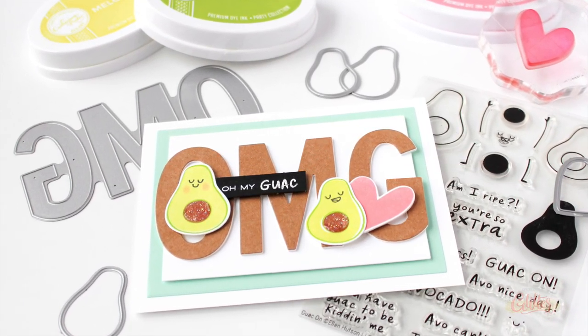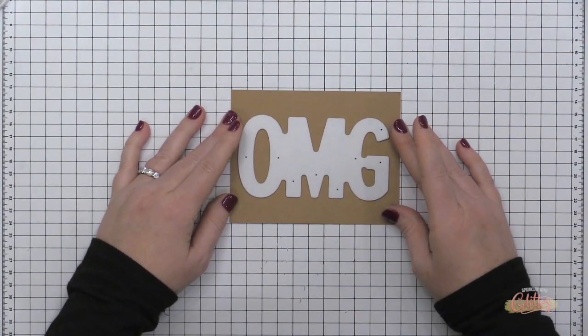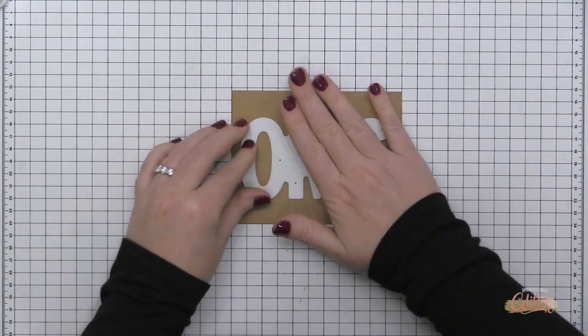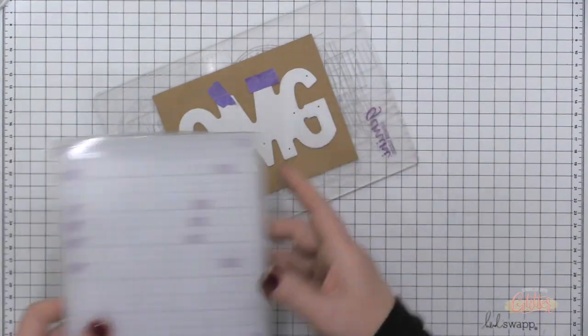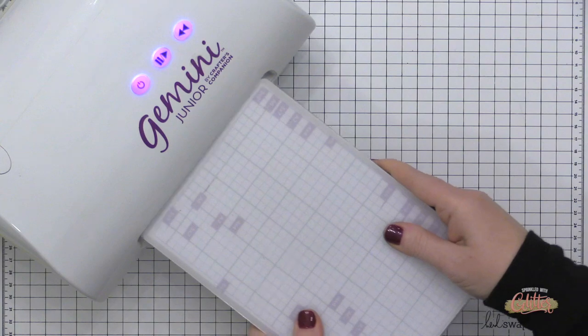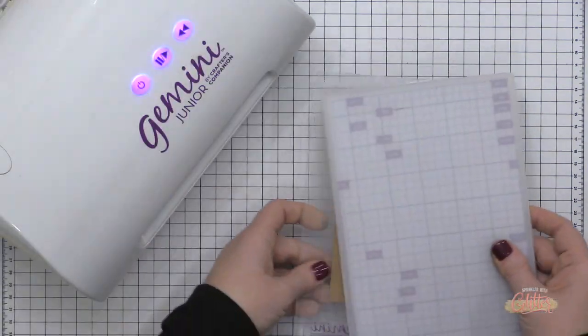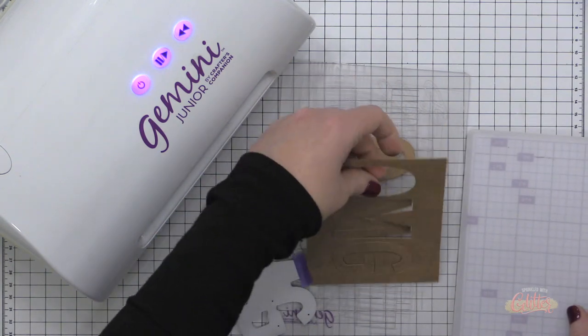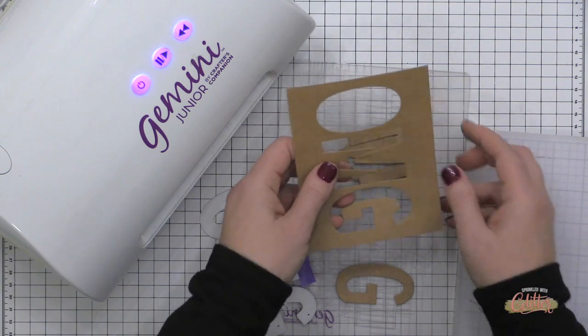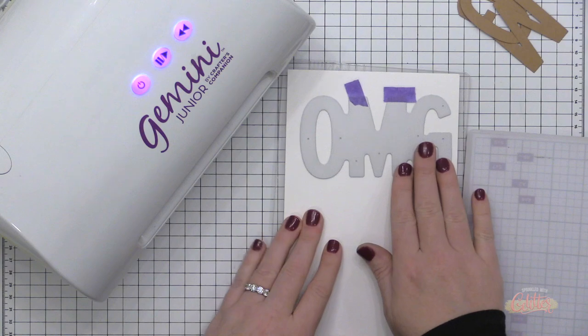I hope you are not tired of this stamp set because I surely am not. I'm going to be creating my own custom sentiment once again and combining it with this Mondo OMG die set from the Essentials by Ellen line. When I saw the avocados, I thought immediately of a sentiment that says oh my guac, and so I'm going to be combining a printed sentiment from my computer with a little bit of heat embossing from one of the stamps in the stamp set to create my finished sentiment strip.